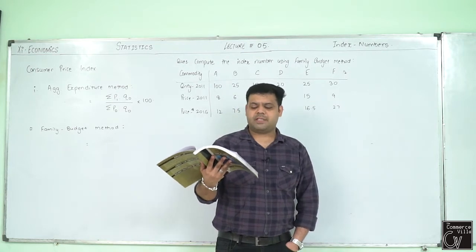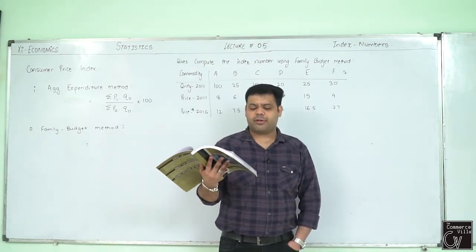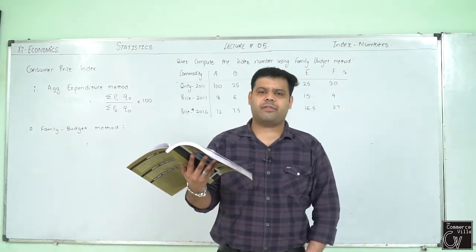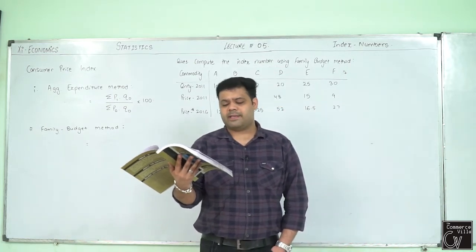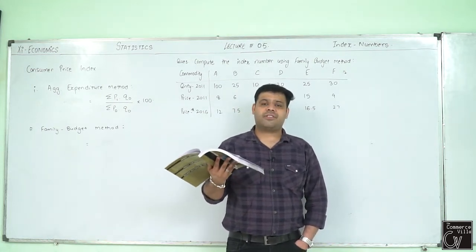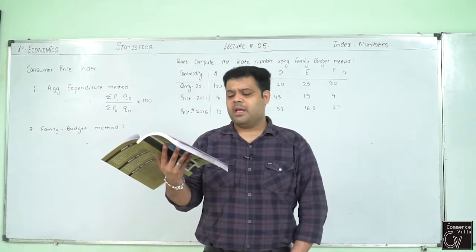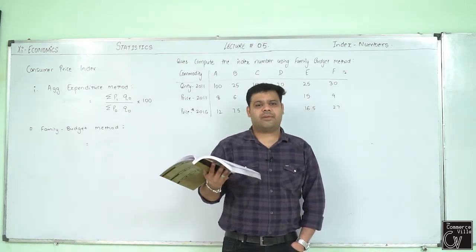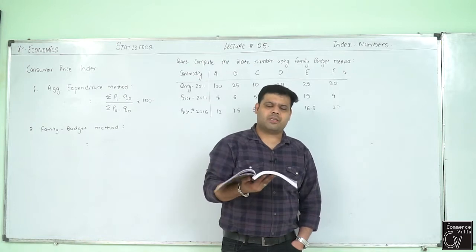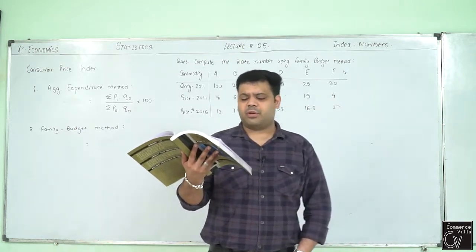Different CPIs for different consumers. The consumption pattern of consumers belonging to different strata of society are different. So there are different CPI based on the consumption pattern of different consumers. These are consumer price index for industrial workers, consumer price index for agricultural laborer and rural labor, and consumer price index for rural, urban, and combined sectors.